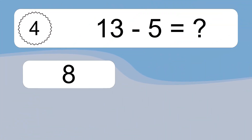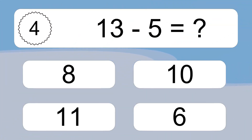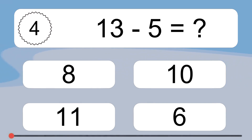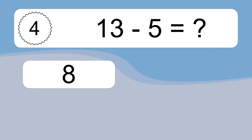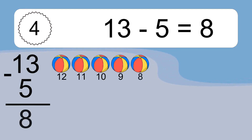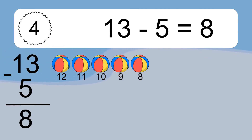13 minus 5 equals what? 13 minus 5 equals 8. Let's count it. 12, 11, 10, 9, 8.